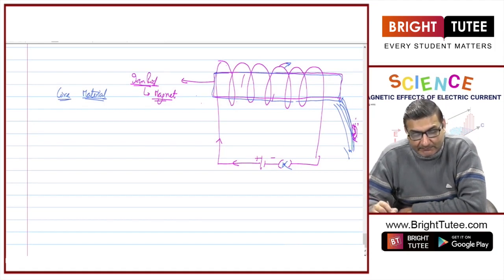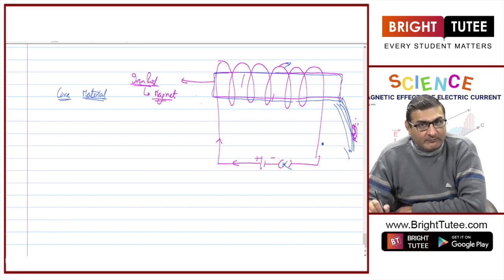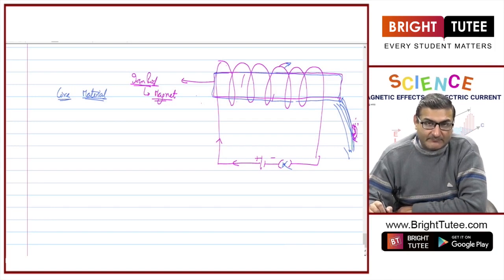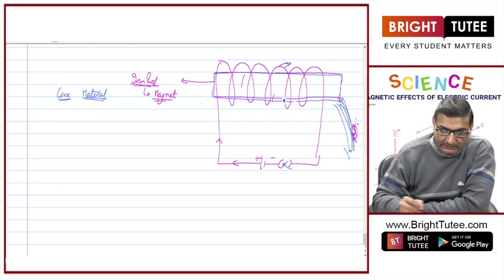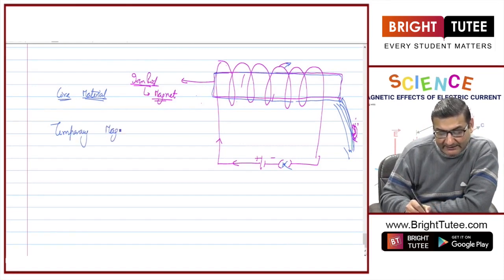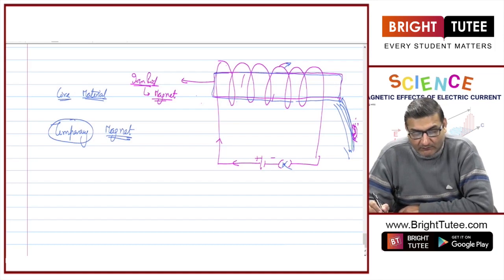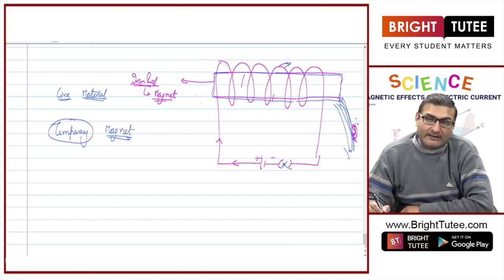That means this particular iron rod will behave as a magnet only till the time the current is switched on. The moment current is switched off, it will lose all its magnetic effect. This iron rod is basically called a temporary magnet — it behaved as a magnet but temporarily, only till the time the current was passed into it.